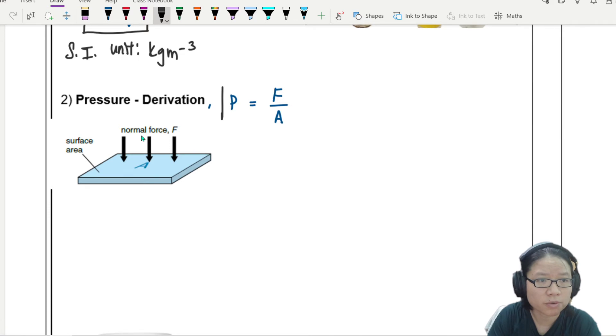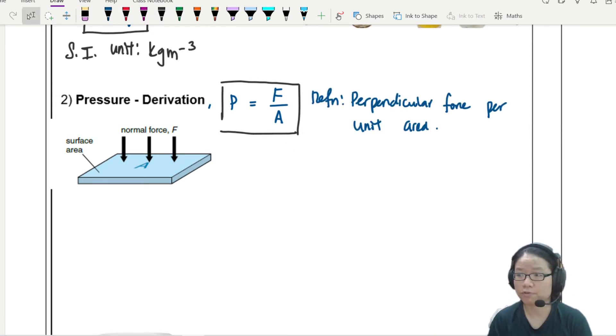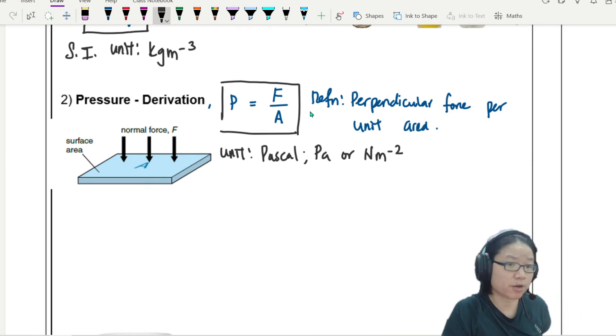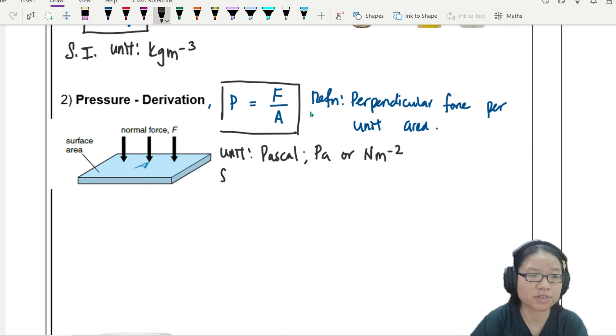And this thing is defined as force per unit area. So let me write that down. Perpendicular force per unit area. And the unit for this is Pascal, named after Blaise Pascal. I don't know whether I'm pronouncing his name right. But the symbol is Pa. And you could also use Newton per meter square. Force is Newton. Area is meter square. These are obviously a scalar. This is obviously a scalar quantity.